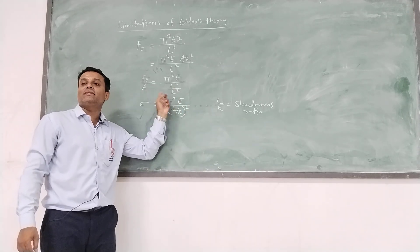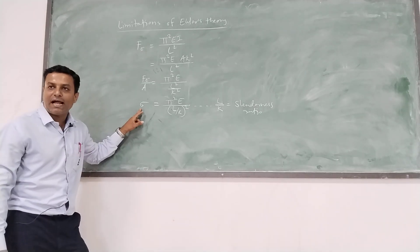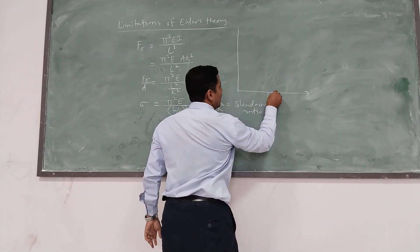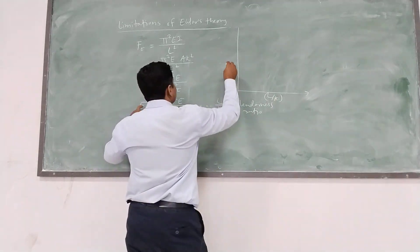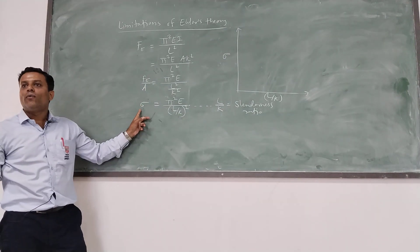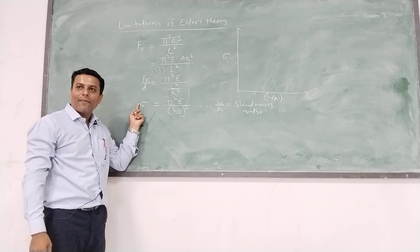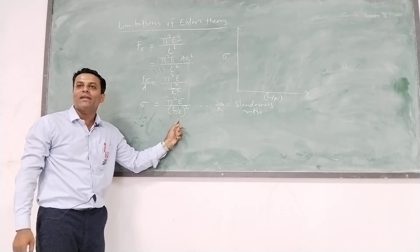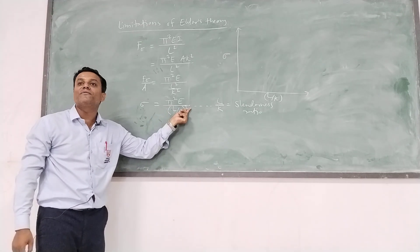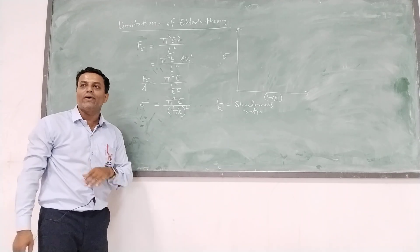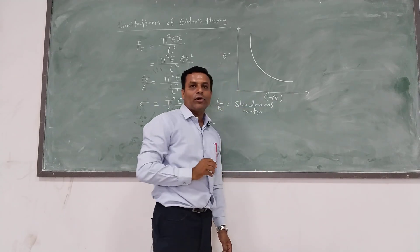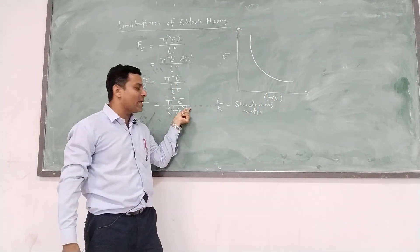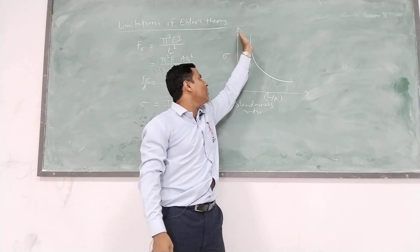The stress in the column equals π²E divided by the slenderness ratio squared. This is the formula to determine stress in a column. If we plot a graph of stress against slenderness ratio, we take L/k on the x-axis and stress on the y-axis. Since σ is inversely proportional to (L/k)², the graph is parabolic because of the square term.